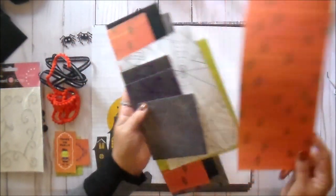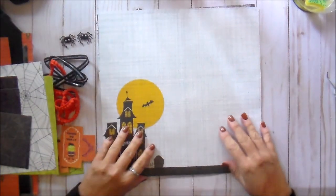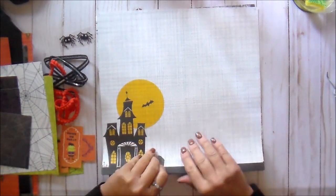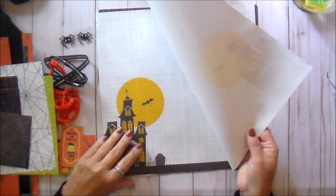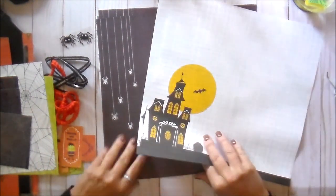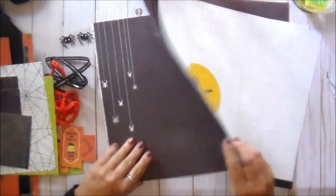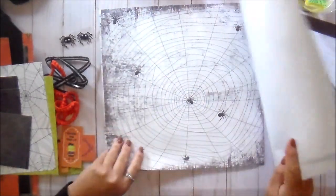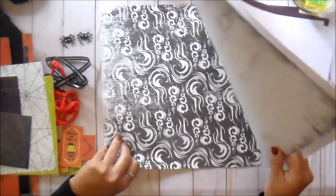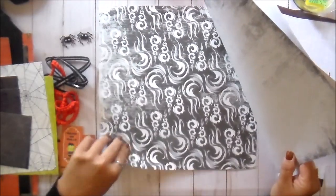So it's lots of fun strips and stuff. All right, so as far as the 12x12s, you get this one, two of these, two of the spider, and then one of the spider web and one of the black and white swirly paper.